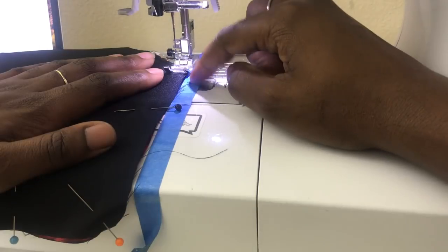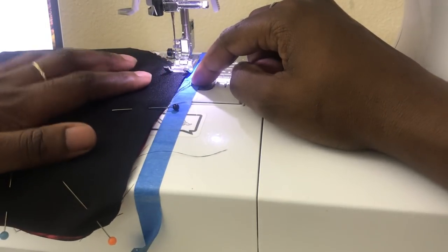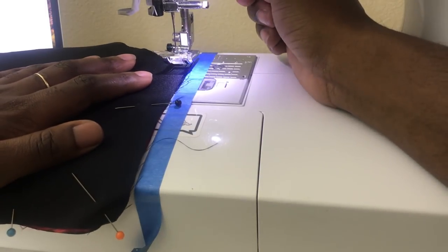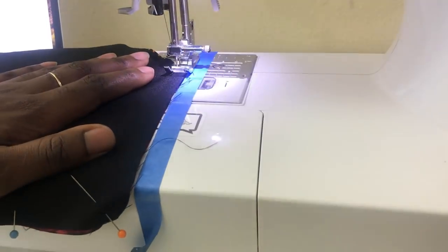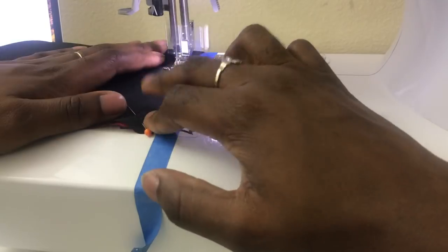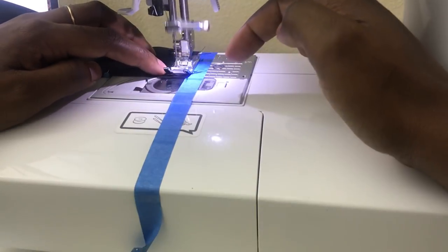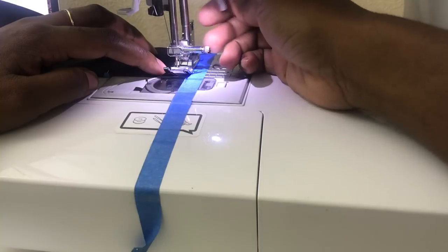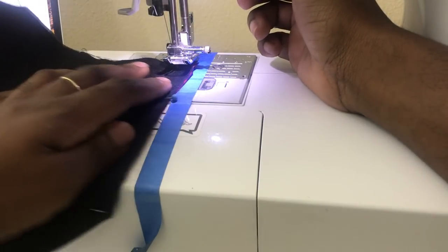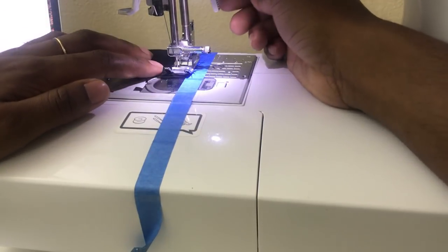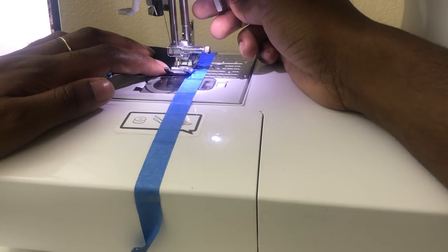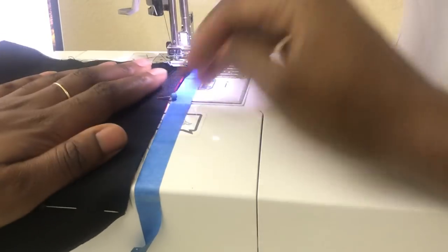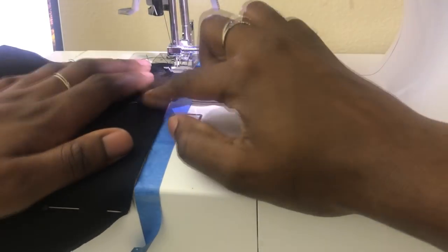Using a 3/8 inch seam allowance, starting at one end. As you get closer to the point, you want to stop about 3/8 inch away. You want to lift up your presser foot and pivot. As you can see, I needed to sew a little bit more. And then now it's at 3/8 inch away, and so I'm going to continue sewing.